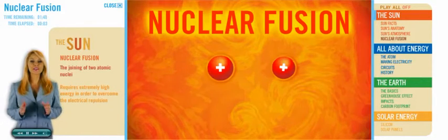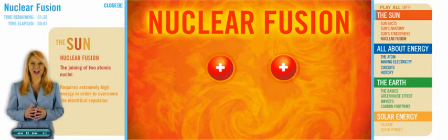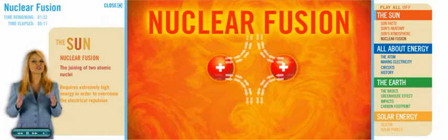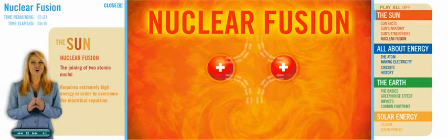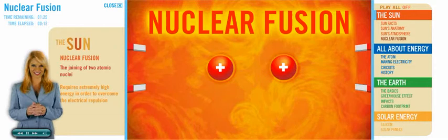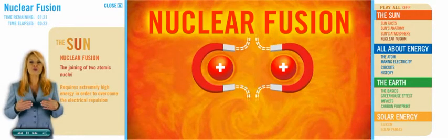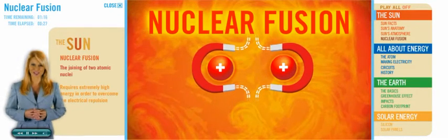Fusion is the joining of two atomic nuclei. This requires extremely high energy in order to overcome the electrical repulsion between two positively charged nuclei, so they can get close enough together to have the strong nuclear force bind them together. Think of two magnets pushing away from each other when both positive ends are facing one another. Nuclear fusion in the Sun happens in several steps.